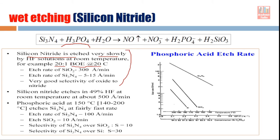Using buffered oxide etchant — 20 parts ammonium fluoride to one part HF at 20°C — the etch rate of SiO2 is about 300 Å/min, while the etch rate of silicon nitride is only 5 to 15 Å/min. So the etch rate is very very slow for silicon nitride when using buffered oxide etchant.